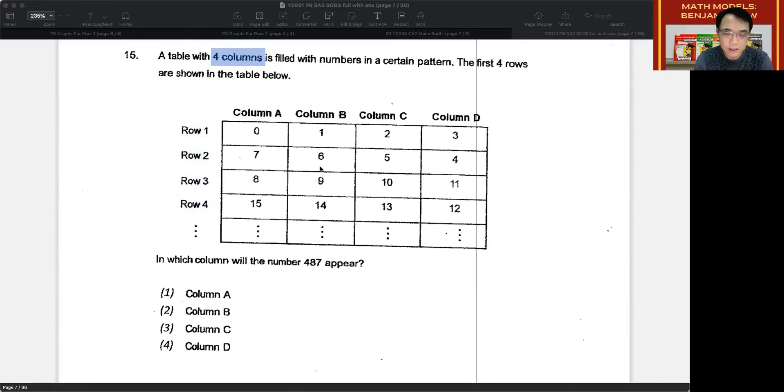In order to start a question like this, what you need to do is you need to be able to look for a pattern that repeats. In this case, you cannot take the pattern as 0, 1, 2, 3, and then 7, 6, 5, 4. It doesn't make sense. So what you want to do is then you want to take it as 0, 1, 2, 3, 4, 5, 6, 7. In other words, there should be a total of eight numbers within one group made up of two rows.